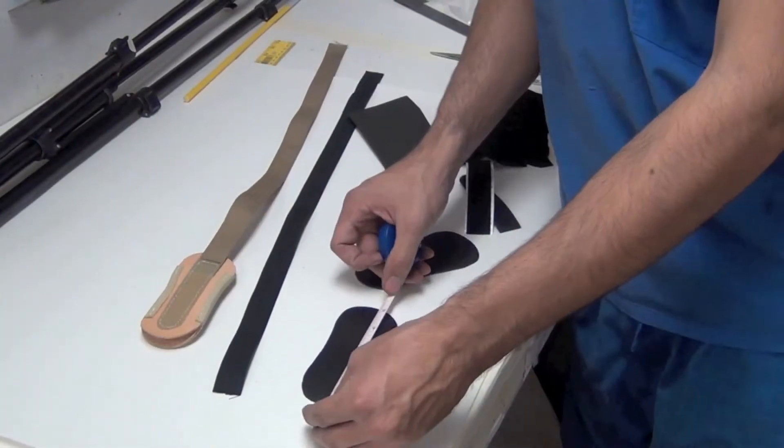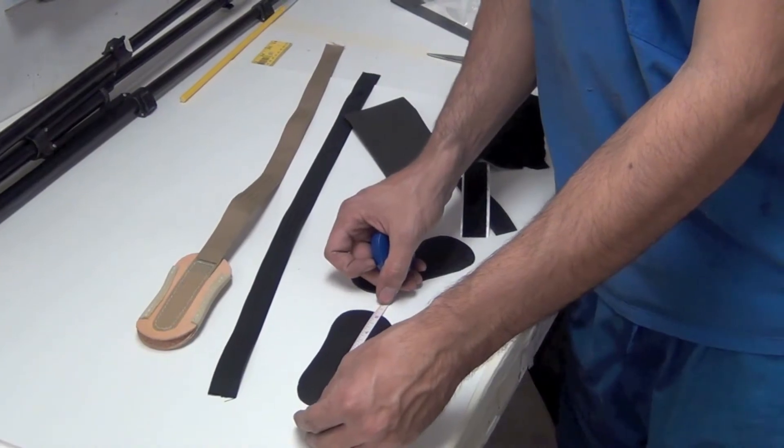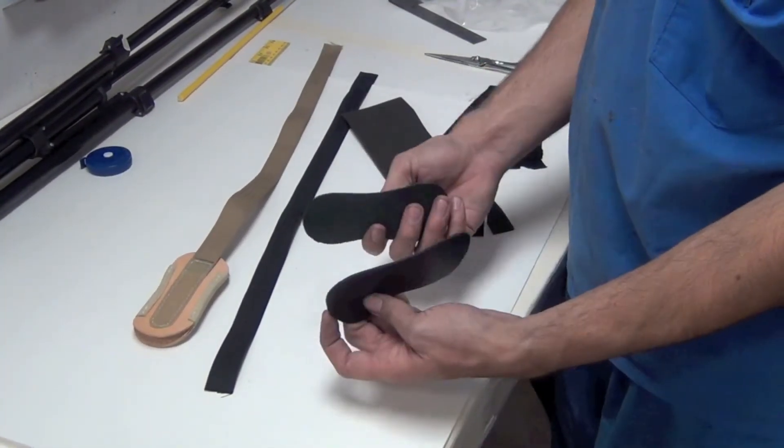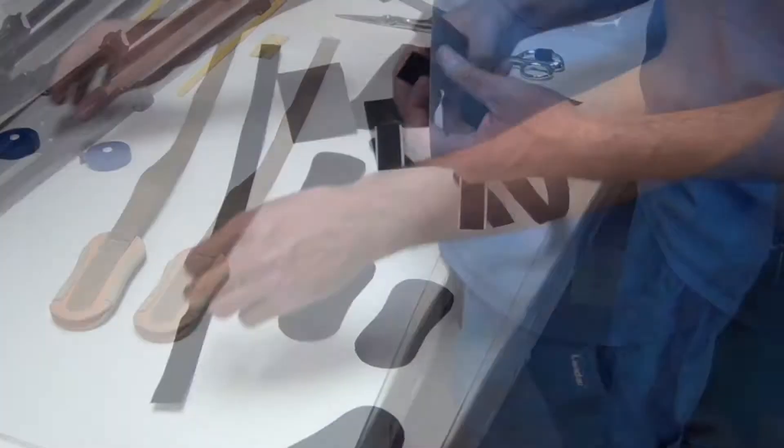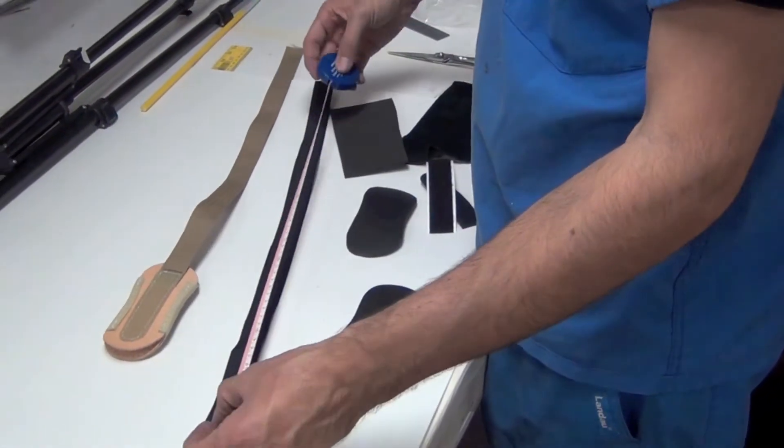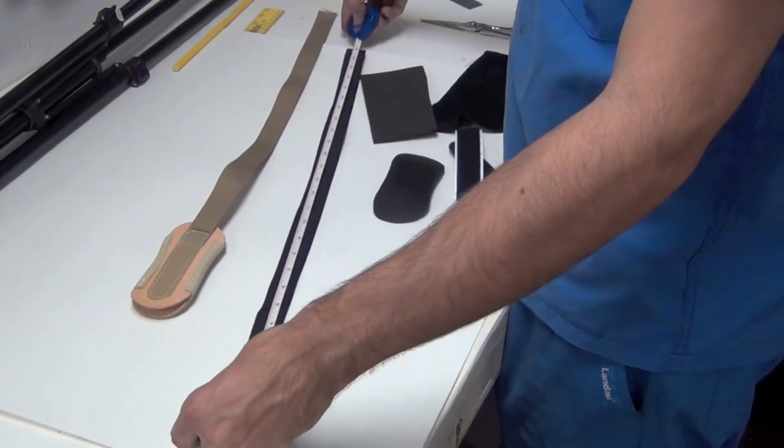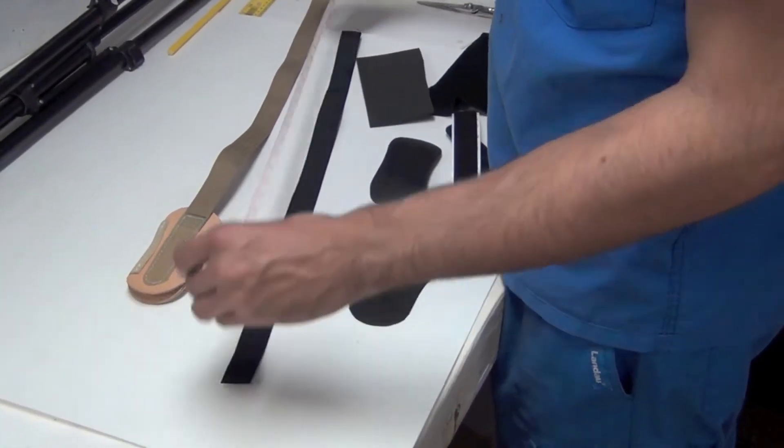This is about 2 1⁄4 by 5 1⁄4, and I cut two of them out of just elk leather. I've got a piece of Dacron that is about 25 inches long, and that should be long enough for pretty much anybody, your average patient.